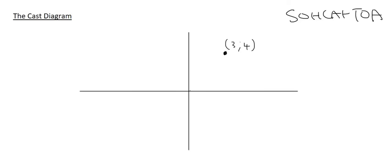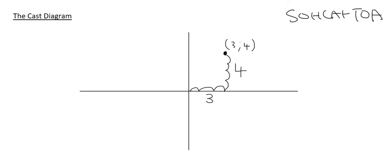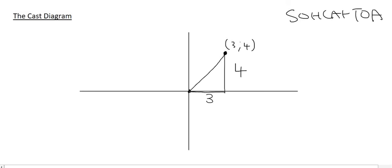If I gave you the coordinate (3, 4), that means this point is 3 units to the right and 4 places up. So the length along the bottom is 3 and the length on the side is 4. Going from the origin and connecting to that point, then down, we've made ourselves a triangle, and to find the missing diagonal length we can use Pythagoras.